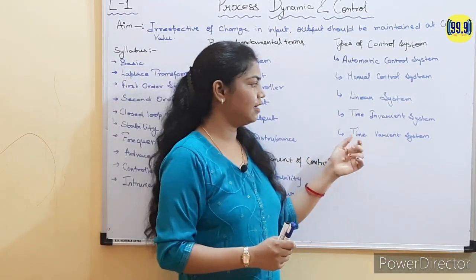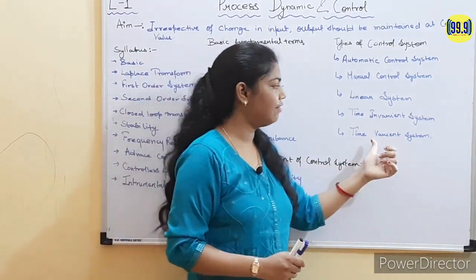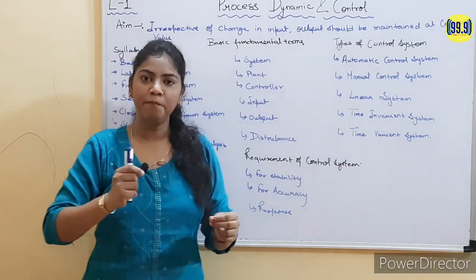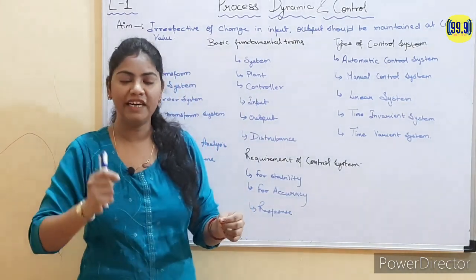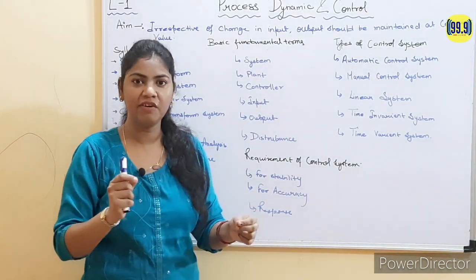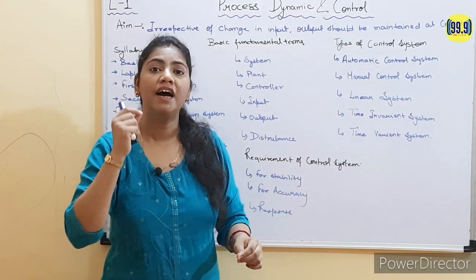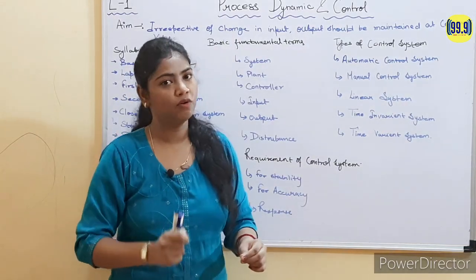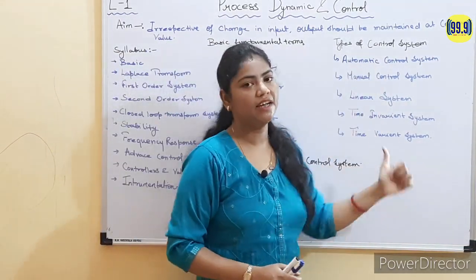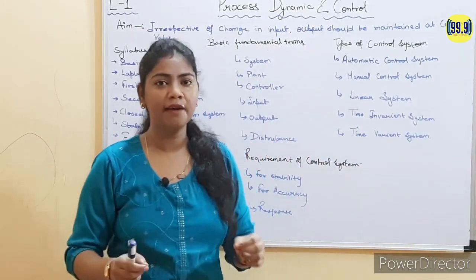Lastly, in a time variant system, the input and output relationship is given by a differential equation with variable coefficients. So these are the four or five types of control systems.